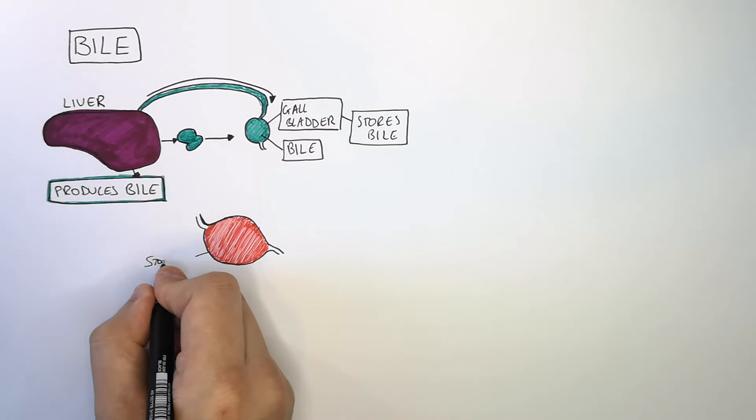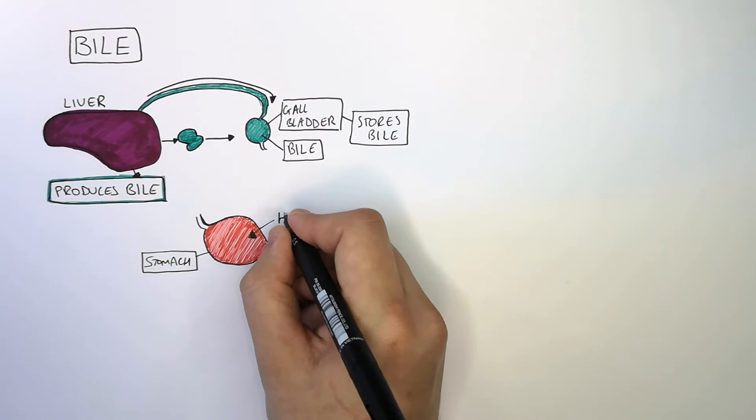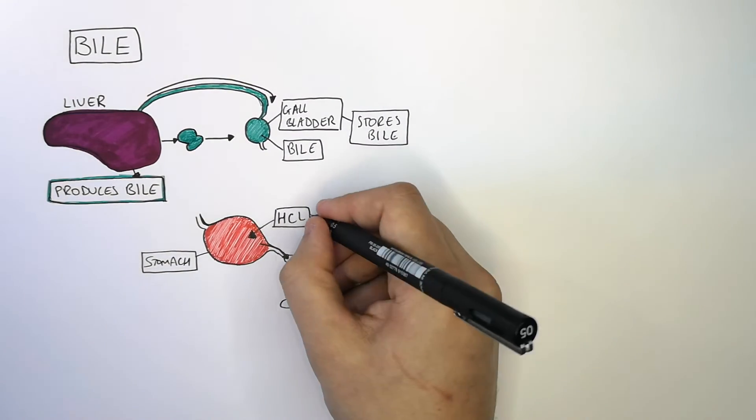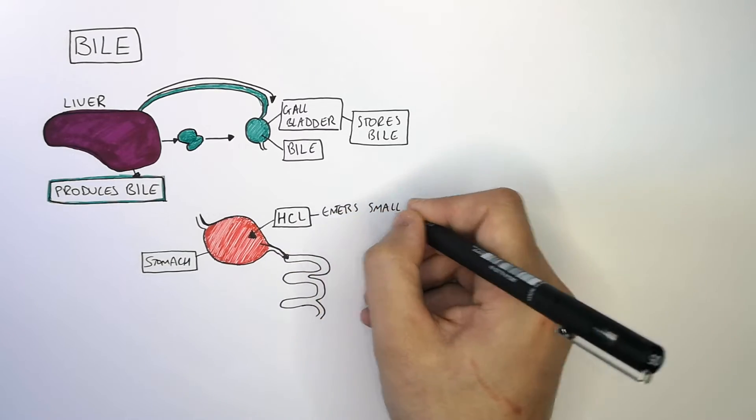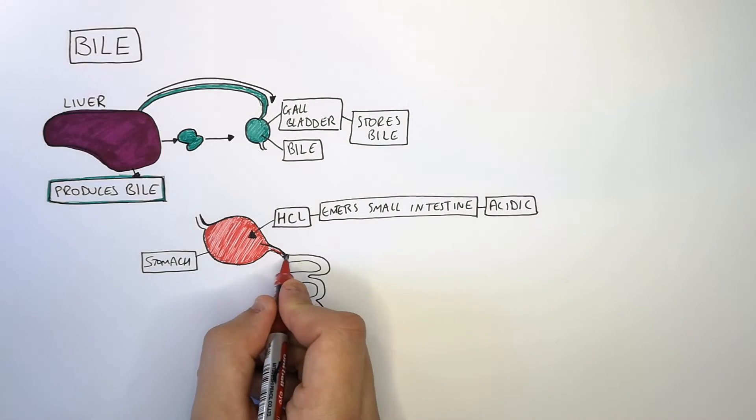When food enters the stomach, it is pummeled and broken down. The environment of the stomach is highly acidic due to the hydrochloric acid inside the stomach. So when the food leaves the stomach and enters the small intestine, that's going to cause the small intestine to become acidic.